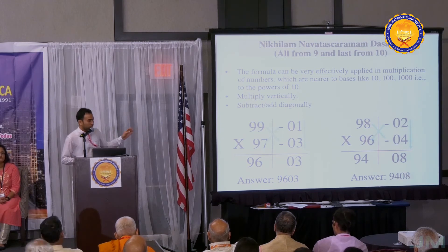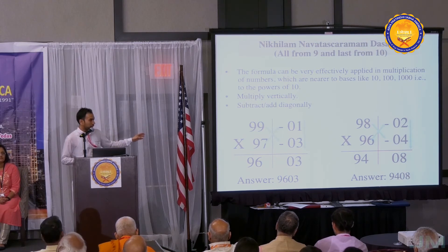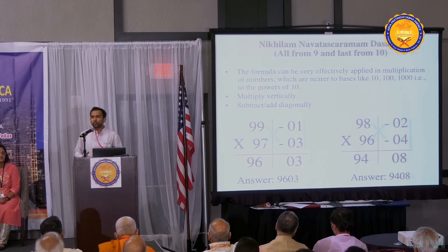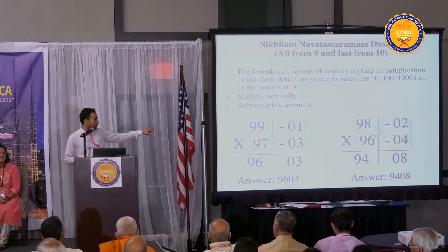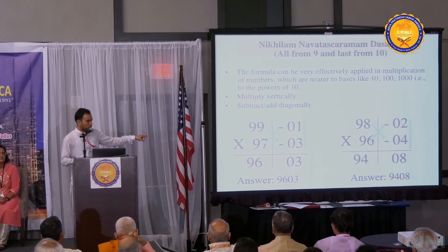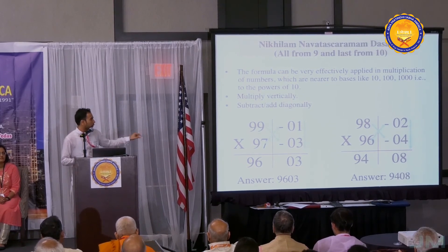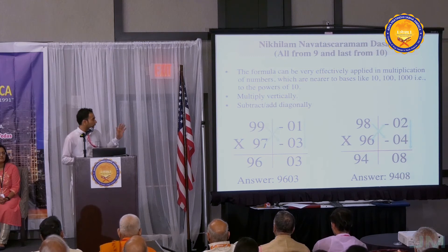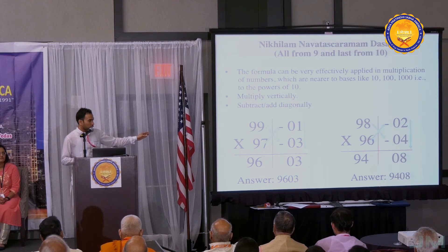Then we are going to multiply one by three. When you multiply one by three, how much? Three, right? So we are going to put three down there, and we are going to put zero as well. So in this method, we multiply vertically. So we get 03 on the right hand side.